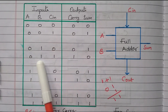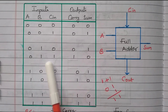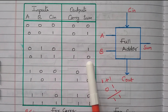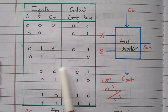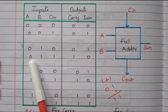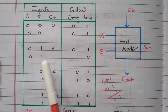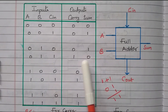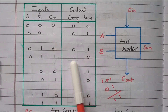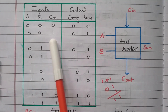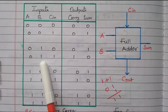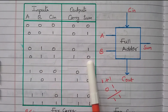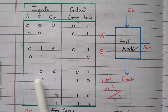When A=0, B=1, Cin=1 — two 1s are available. Adding two 1s gives sum=0 and carry is generated. With only one 1 available, sum is 1 and carry is 0. With two 1s available, sum is 0 and carry is 1.